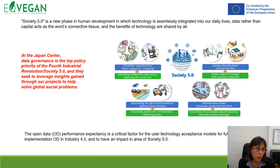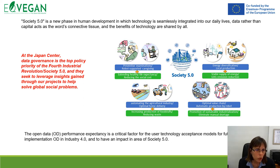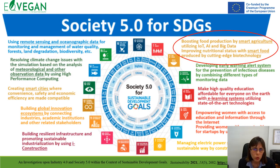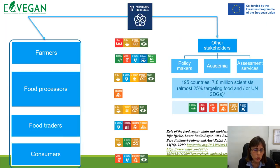Society 5.0 represents a new phase in human development in which technology is seamlessly integrated in our daily lives. The aim is to use information as in an industrial revolution, where data is the most important factor. Open data performance expectancy is a critical factor for user technology acceptance, and models need to be prepared for future implementation in Industry 4.0 and 5.0. This includes boosting food production through smart agriculture, smart production, and different kinds of digitalization and optimization.